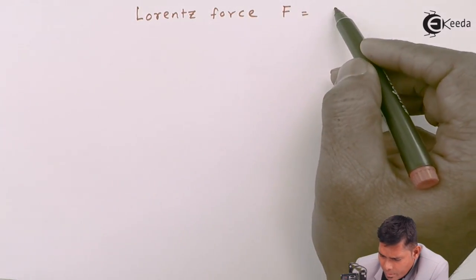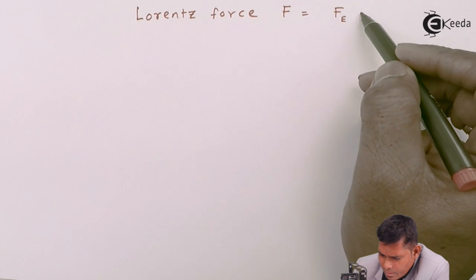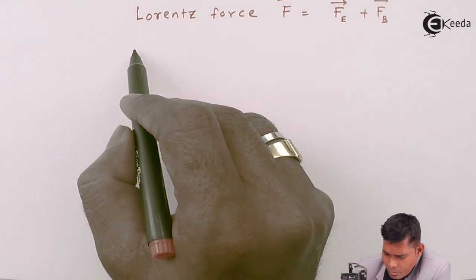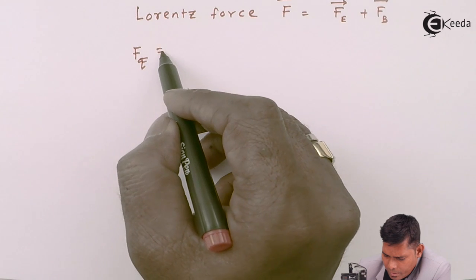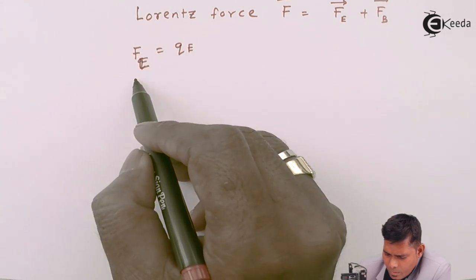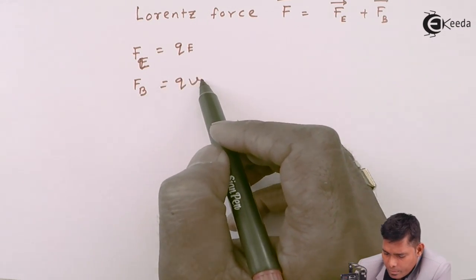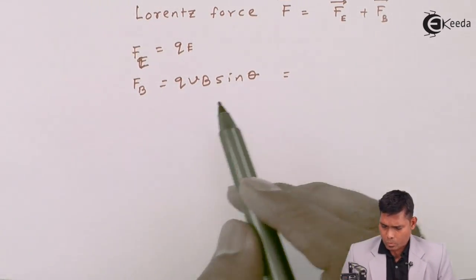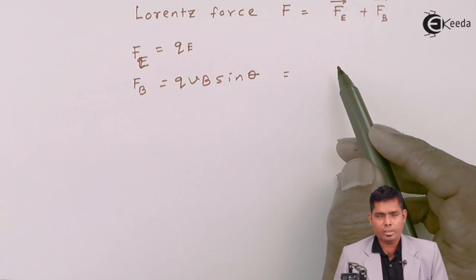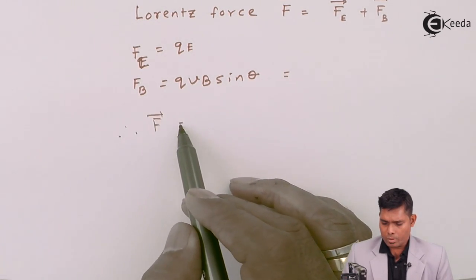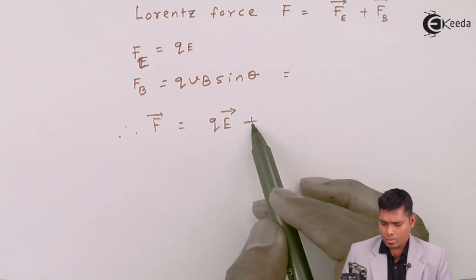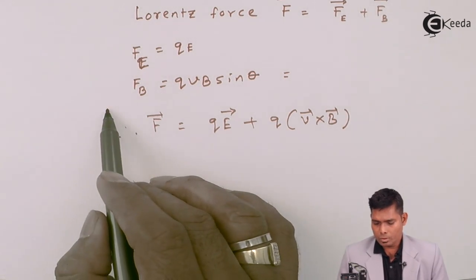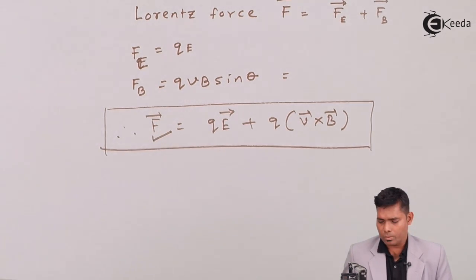Lorentz force F equals the sum of the force due to electric field plus force due to magnetic field. The force due to electric field is QE, and the force due to magnetic field is QV cross B (with sin theta). So in vector form: Lorentz force F = QE + QV×B. This is the formula for Lorentz force.